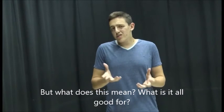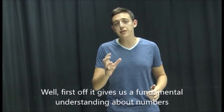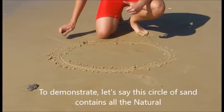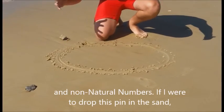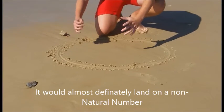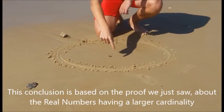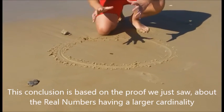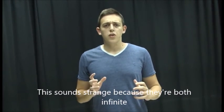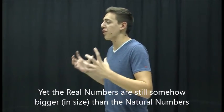But what does this mean? What is it all good for? Well, first off, this gives us a fundamental understanding about numbers. To demonstrate, let's say this circle of sand contains all the natural and non-natural numbers. If I were to drop this pin in the sand, it would almost definitely land on a non-natural number. This conclusion is based on the proof you just saw about the real numbers having a larger cardinality than that of the natural numbers. This sounds strange because they're both infinite, yet the real numbers are still somehow bigger than the natural numbers.